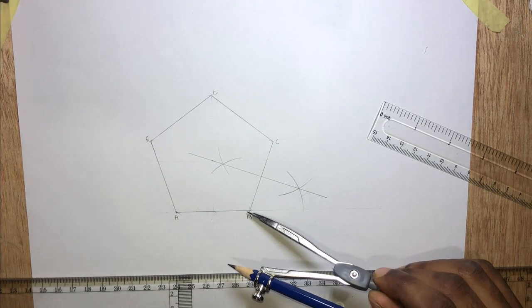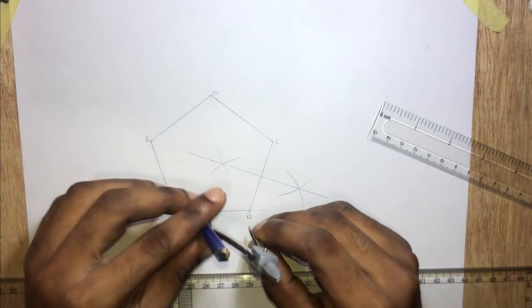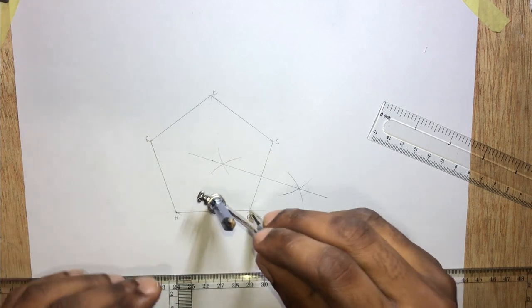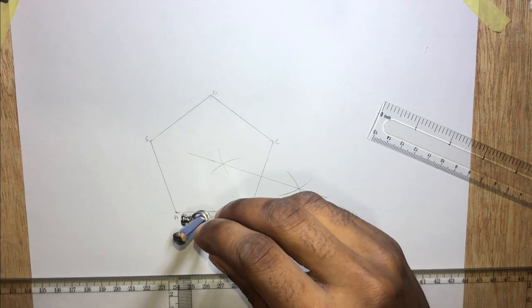Next, let's bisect the angle at point B.